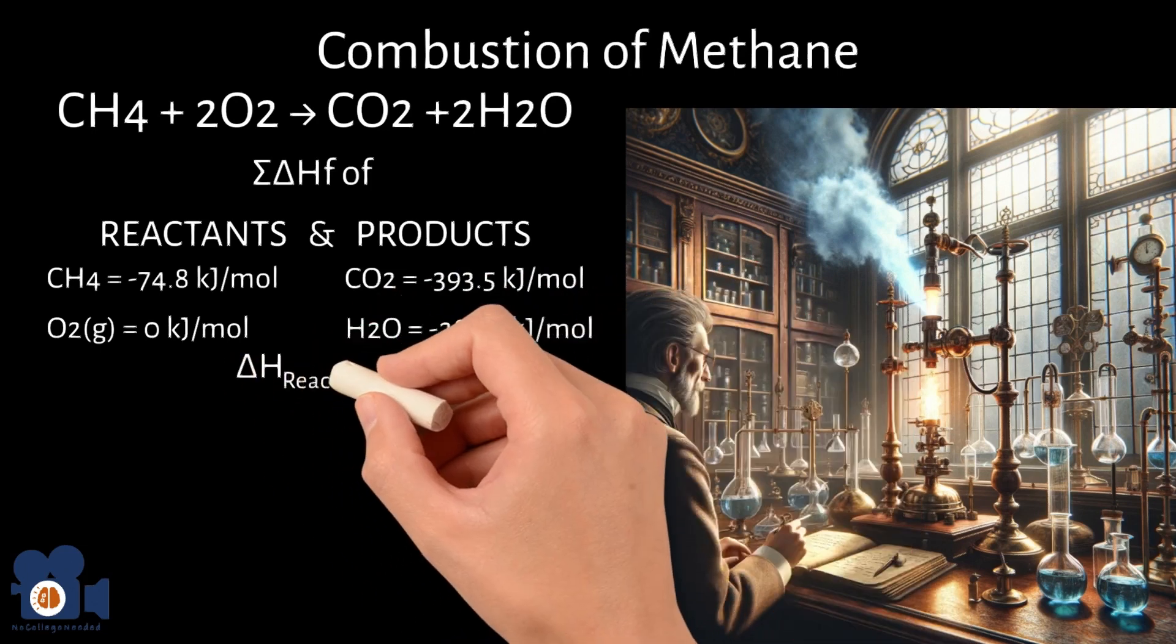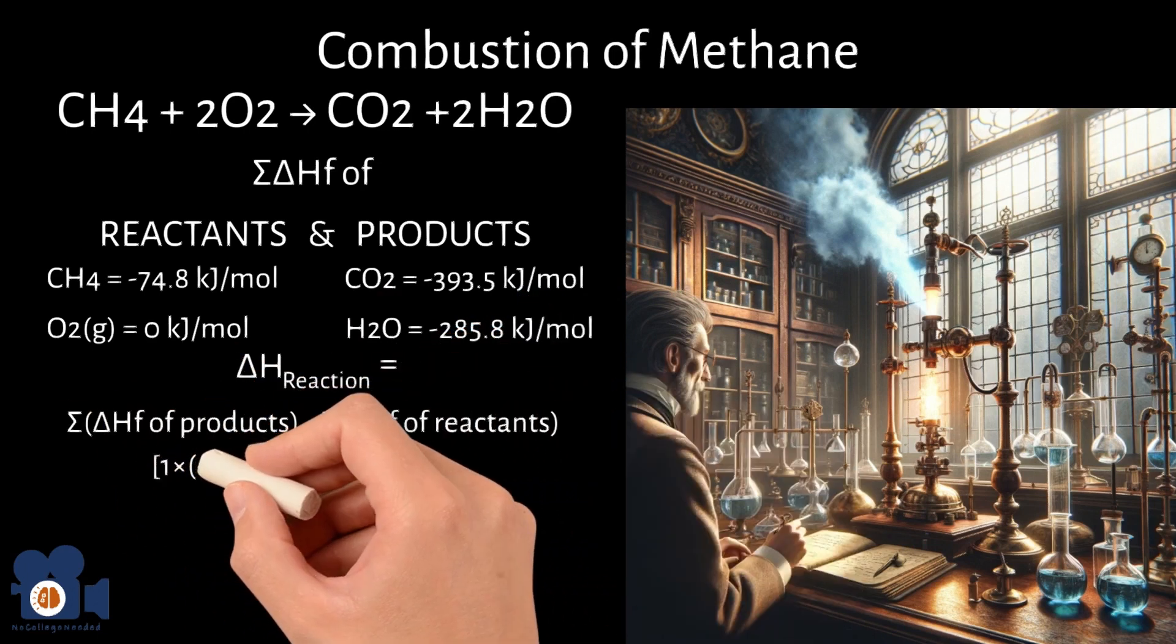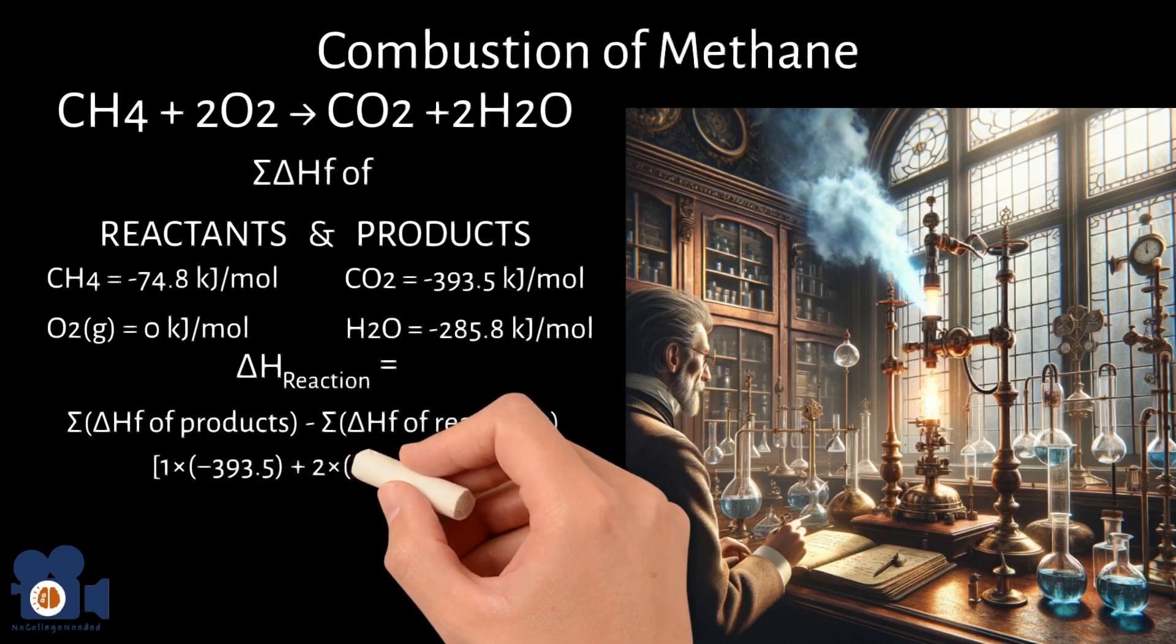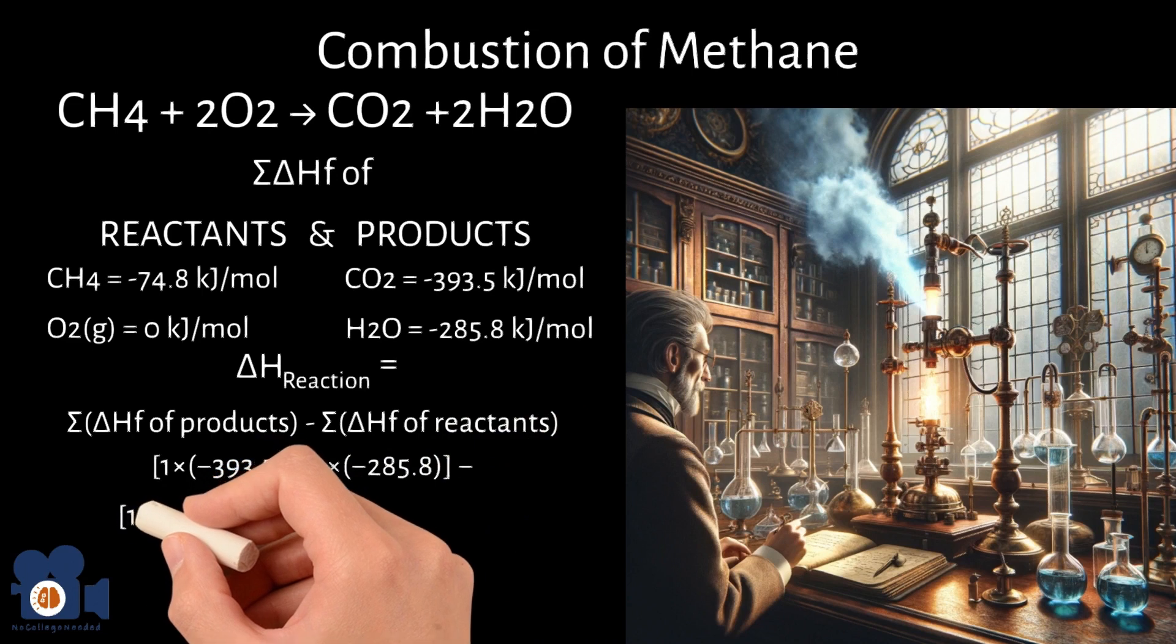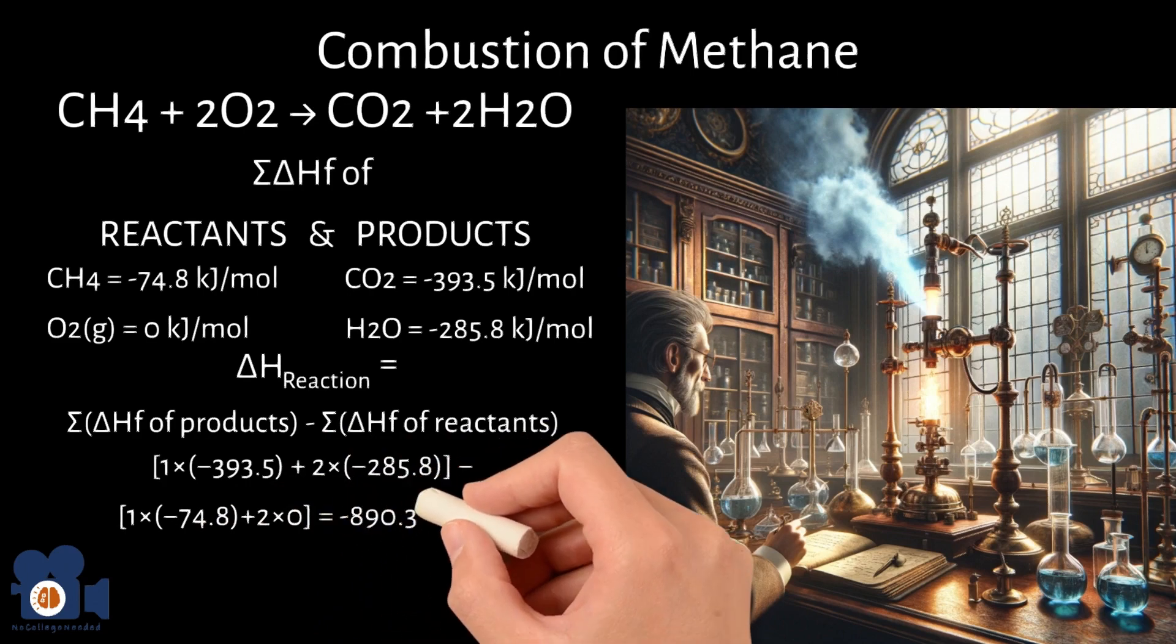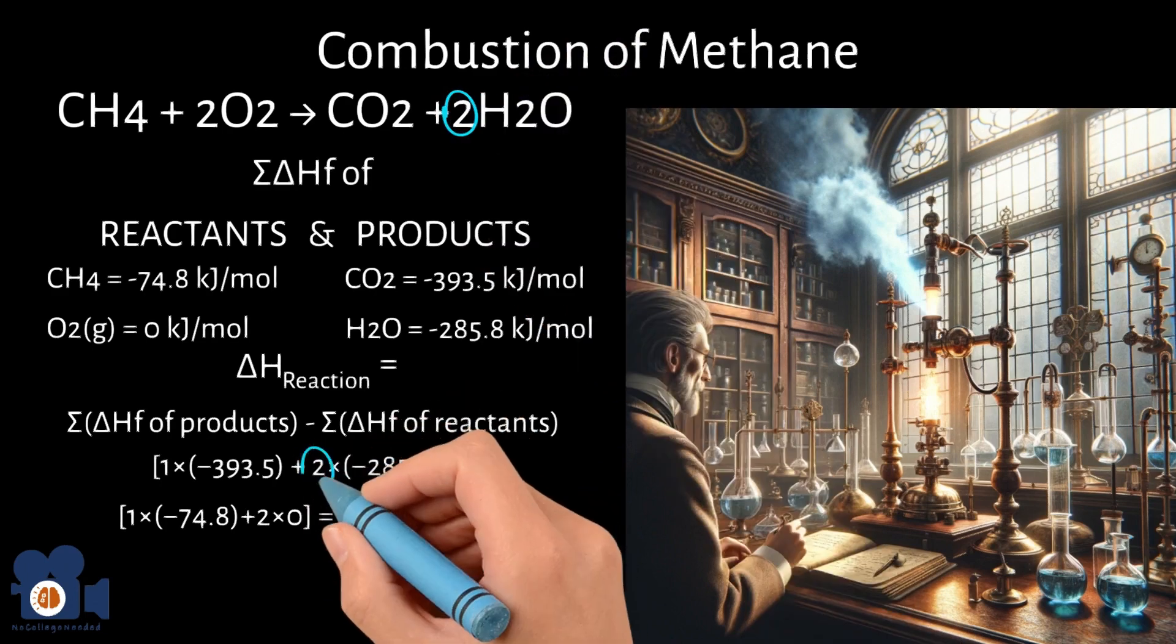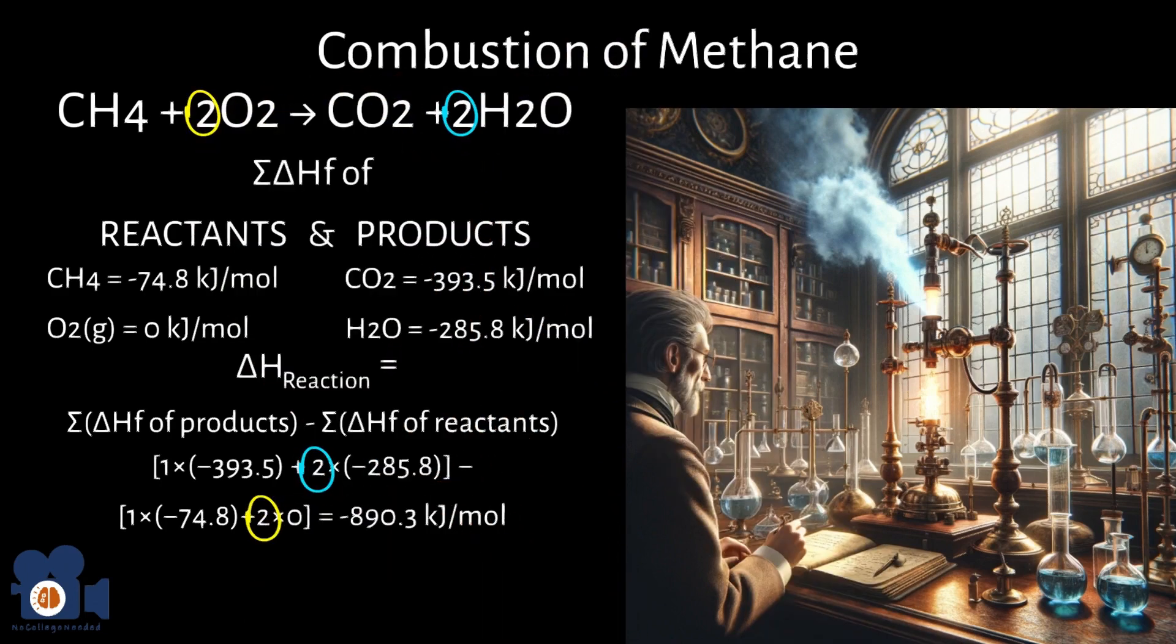Plugging these values into the equation looks like delta H reaction equals 1 times negative 393.5 plus 2 times negative 285.8 minus 1 times negative 74.8 plus 2 times 0 equals negative 890.3 kilojoules per mole. By the way, that's three times more than the combustion of hydrogen.